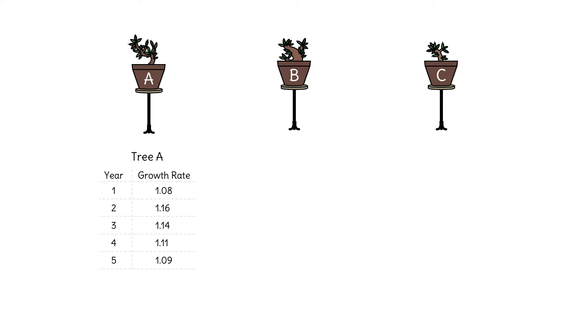This tree grew 8% in the first year she measured, so the tree's height was 1.08 times that of the previous year. The tree grew 16% in the second year, so the rate as a decimal was 1.16.